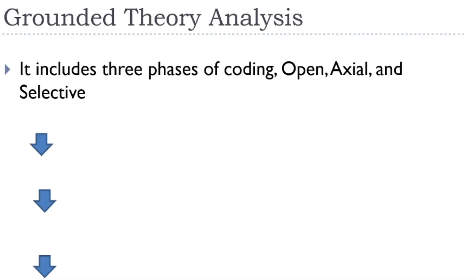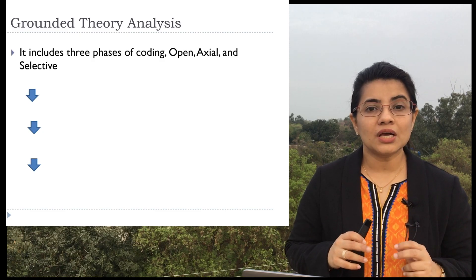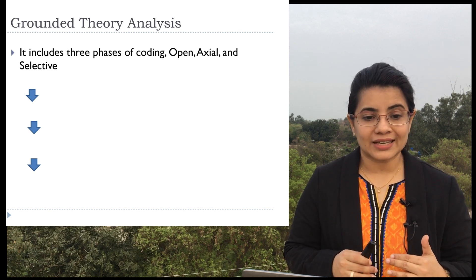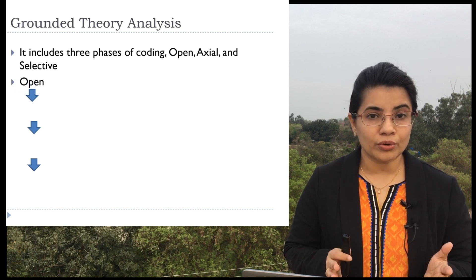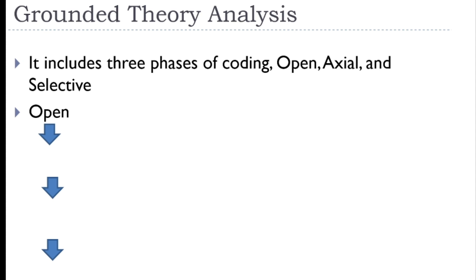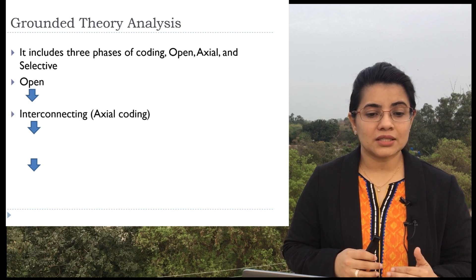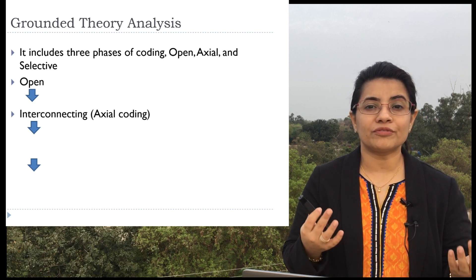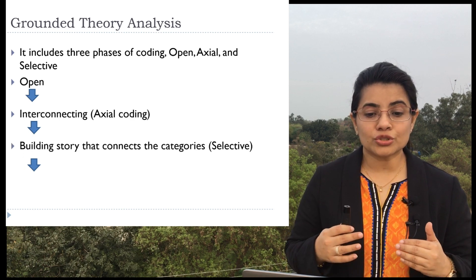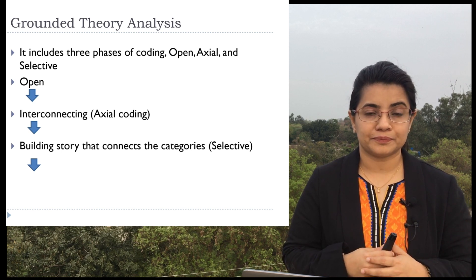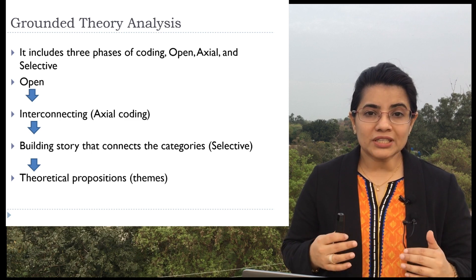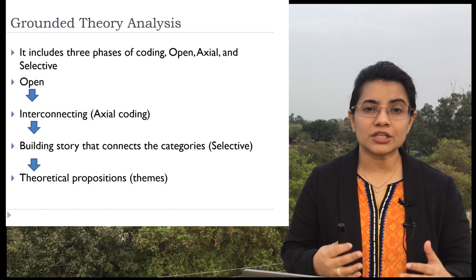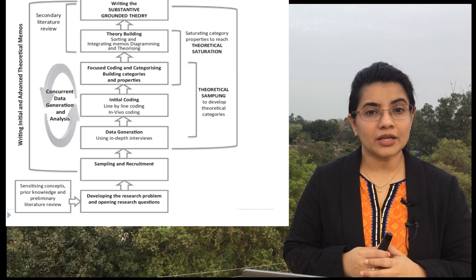Another type of analysis in qualitative research is grounded theory analysis. It includes three phases of coding: open coding (the initial, very early codes from your data), axial coding (interconnecting codes to develop connections between them and get similar categories), and selective coding (building a story that connects the categories). After doing that, you emerge with themes, which is called theoretical propositions — the theory-building step in qualitative data analysis.